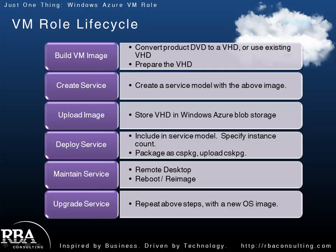In terms of the lifecycle, the first thing you do is build out that VM image on-prem. You probably want to sysprep it and do all the typical things you do to build out a VM as a VHD file. Once you've done that, you create the service model in Visual Studio — create a Windows Azure project and add a VM role to it. Then you upload the image. You store that VHD in Windows Azure Blob Storage so that when instances get spun up, the controller can pull that instance out of Blob Storage and use it to spin up the VHD.